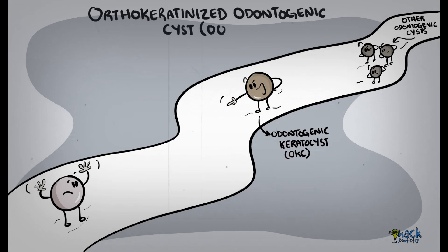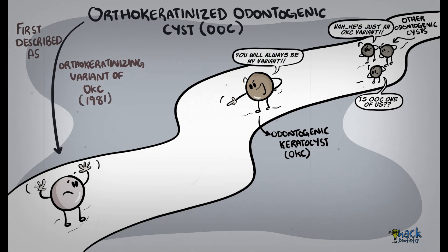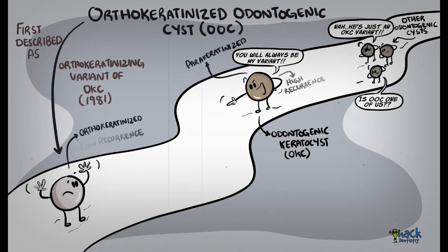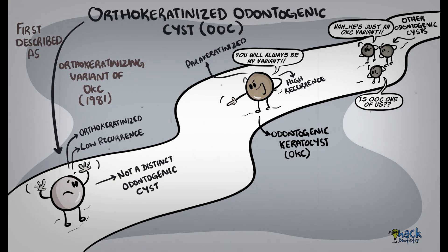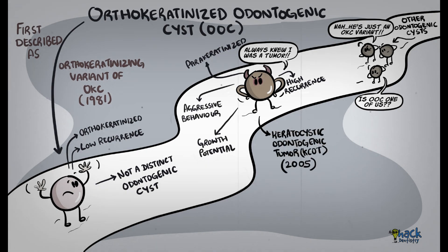Ortho-keratinized odontogenic cyst was first described as an ortho-keratinizing variant of odontogenic keratocyst in 1981. The basis of this distinction was the difference in its histopathology and its reduced chances of recurrence compared to odontogenic keratocyst, although it was not given the status of a distinct odontogenic cyst. Later in 2005, odontogenic keratocyst was classified as a tumor considering its aggressive behavior and growth potential, and was renamed keratocystic odontogenic tumor.